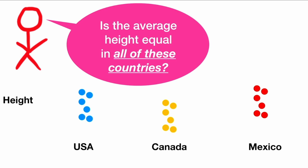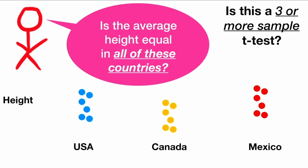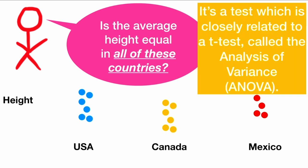But what if we want to ask, is the average height equal in all of these countries? Is it equal in the U.S., Canada, and Mexico? Or maybe even more than three countries? Do we just do a three or more sample t-test? Well, what we really do is a test closely related to a t-test called the analysis of variance, or ANOVA.